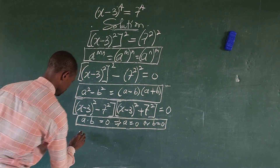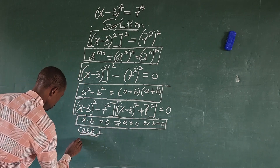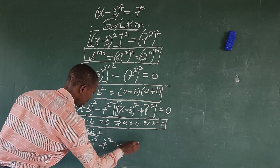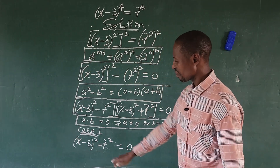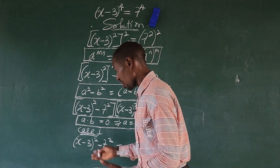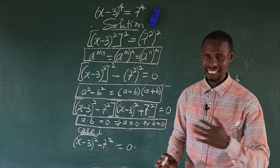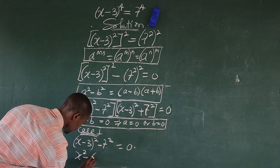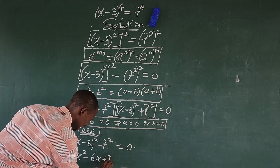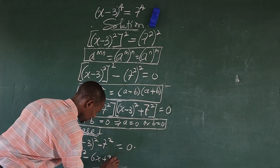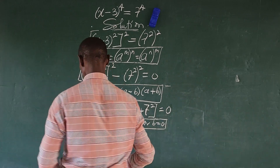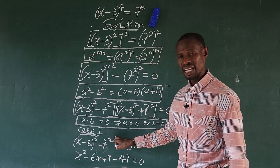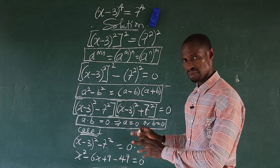So we can equate each factor to 0. Let's take Case 1. We have x minus 3, all to the power of 2, minus 7 to the power of 2, equal to zero. So we open up the bracket. If we expand this, this is going to give us x to the power of 2, minus 6x, plus 9, minus 7 to the power of 2, which gives us 49, equal to zero. Note that minus 7 to the power of 2 is different from (−7) to the power of 2 — here the minus is not affected yet.